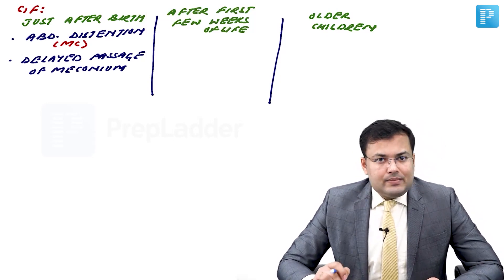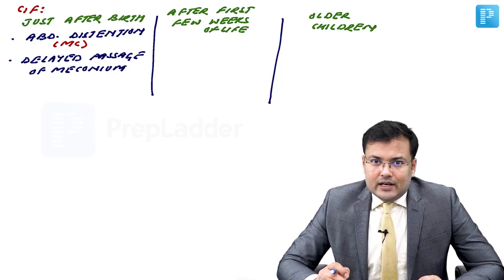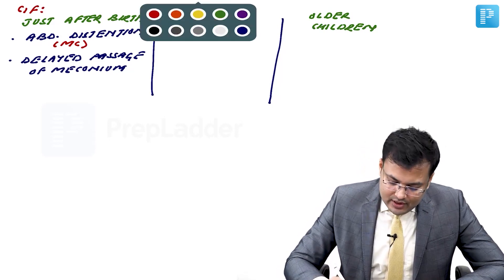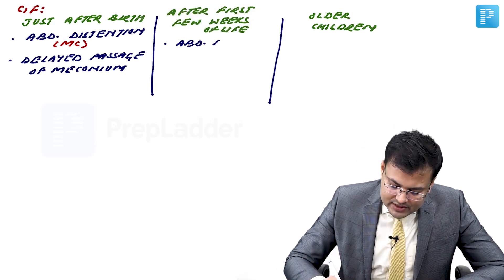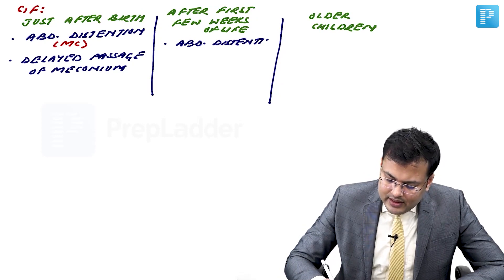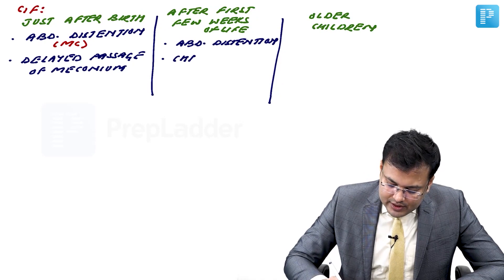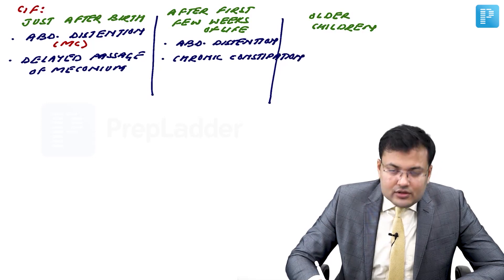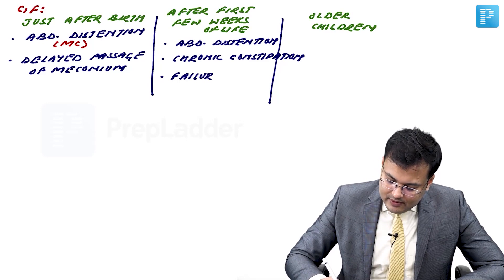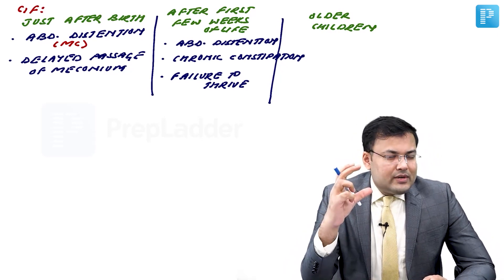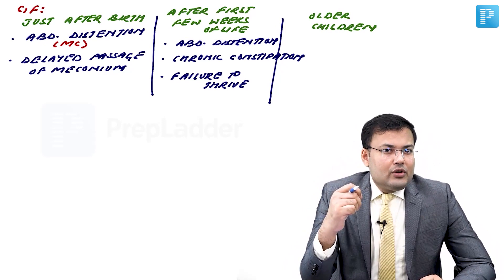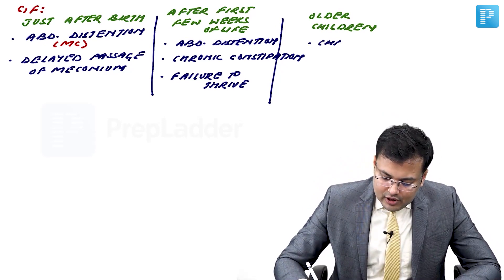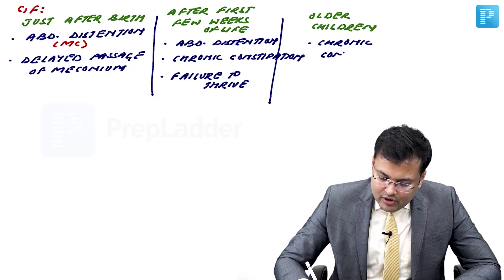After the first few weeks of life, patients also have abdominal distension, failure to thrive — meaning the child is not gaining weight — and chronic constipation. In patients with short segment involvement that is also wider, there is generally only off-and-on constipation.